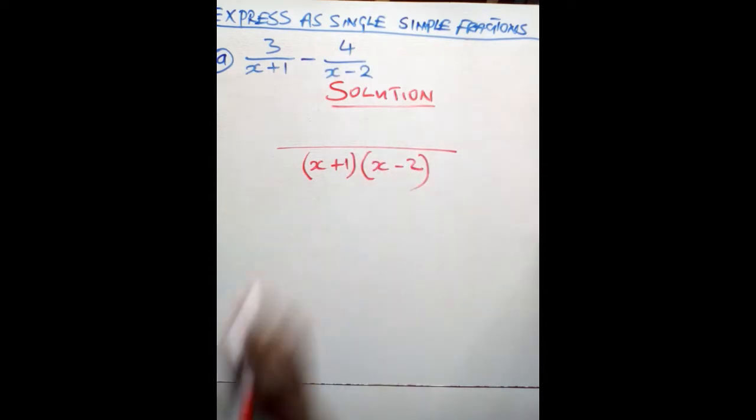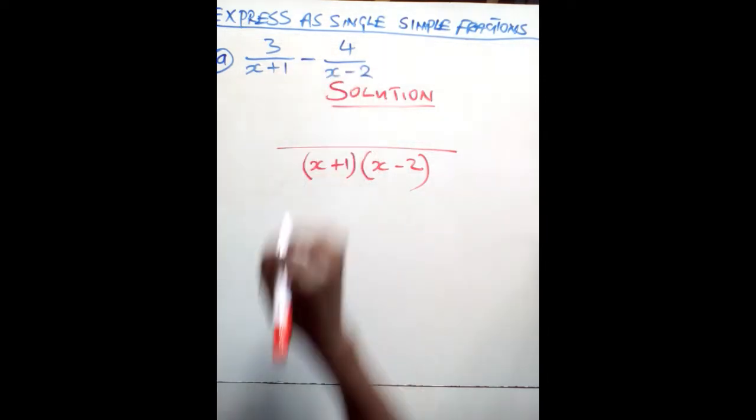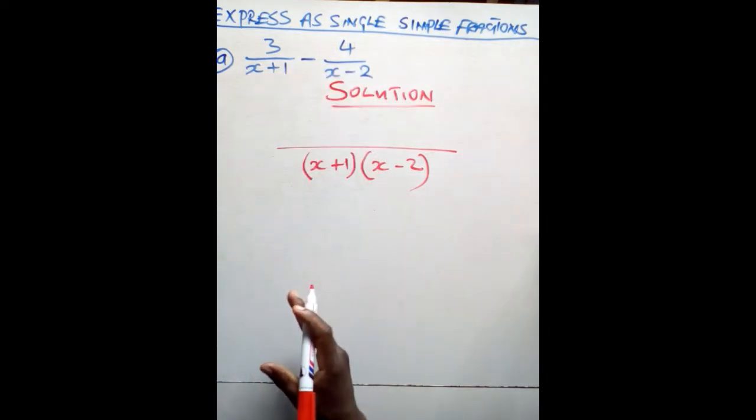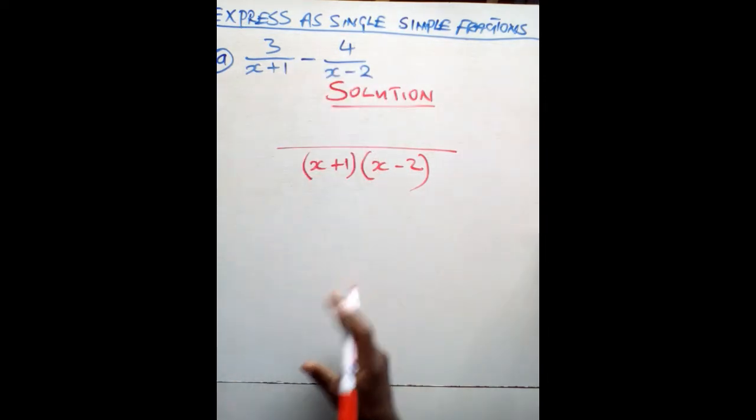What you do first of all: this is subtraction of fractions. We always find the lowest common denominator. In this case, how do we find the lowest common denominator? We actually multiply these two. We say over — that would now be (x plus 1) times (x minus 2). We multiply these two.